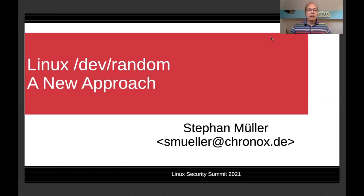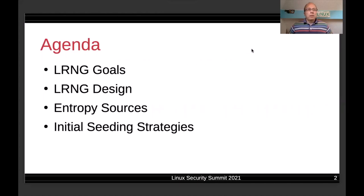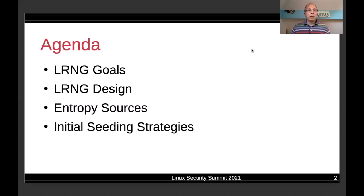Let's have a look at the actual presentation. This presentation and the code that I'm going to show here is a means to facilitate the discussion around Dev random and to achieve a flexible implementation. My first step is to discuss the design goals, the second step is to analyze and outline the design, and finally I will cover the entropy sources followed by the initial seeding strategies applied to achieve a fully seeded DRNG as soon as possible.